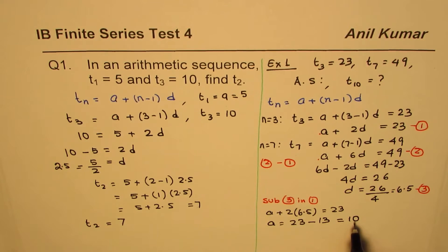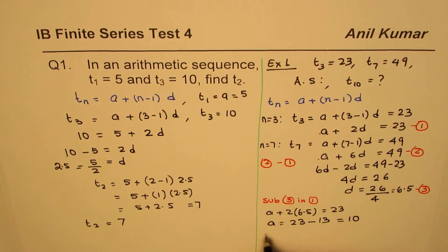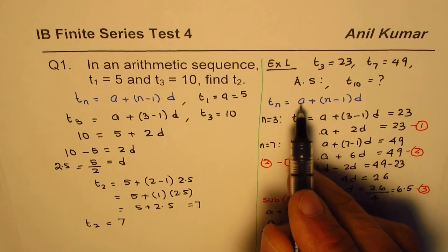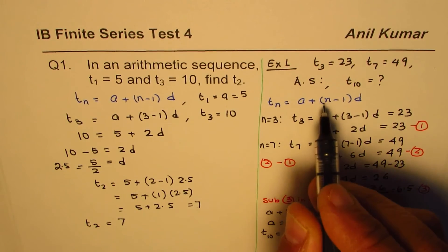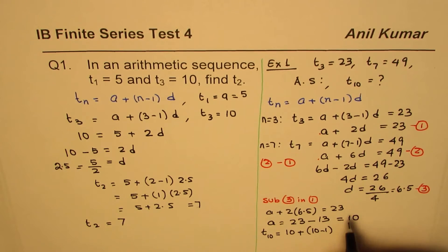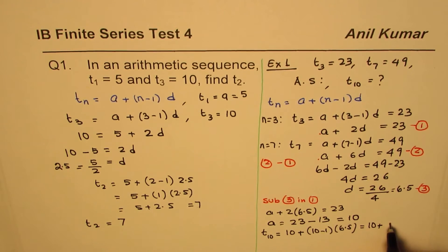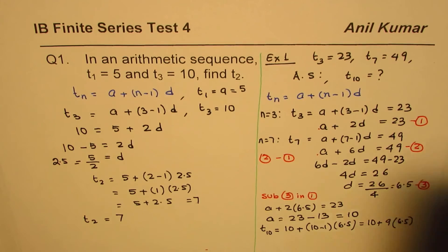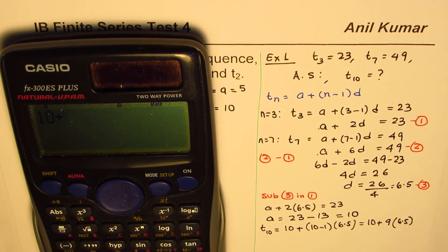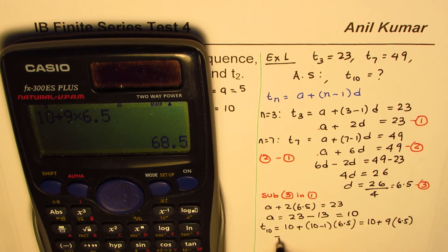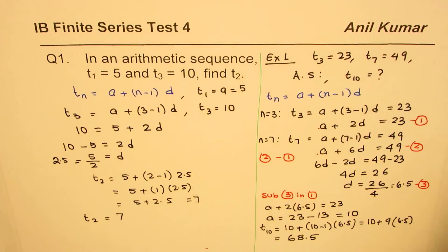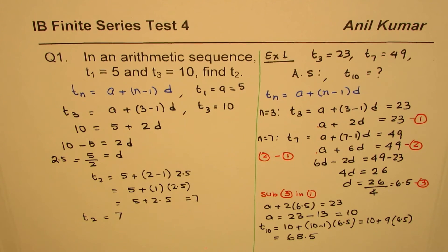Now we can use a = 10 in our formula to find the tenth term. t10 = 10 + (10-1) × 6.5 = 10 + 9 × 6.5. Calculating: 9 × 6.5 = 58.5, so t10 = 10 + 58.5 = 68.5. So the tenth term is 68.5.